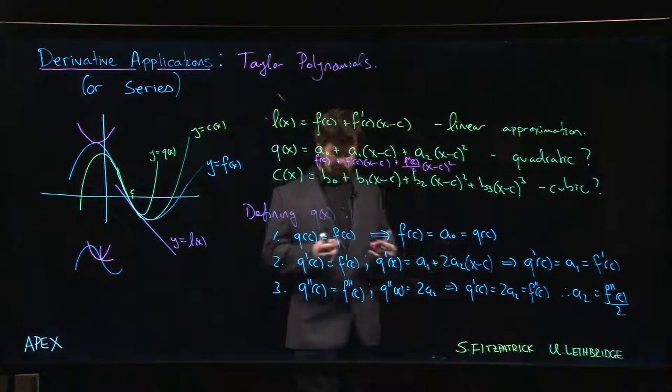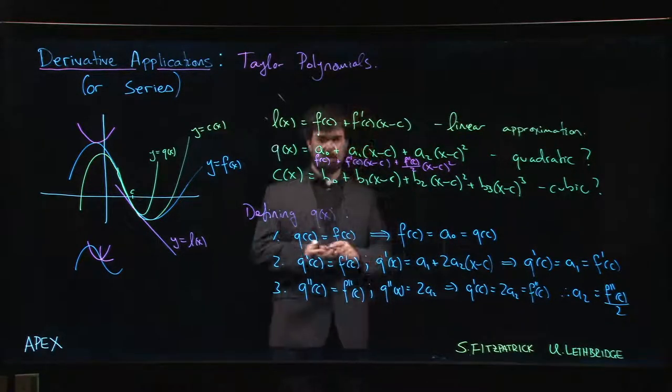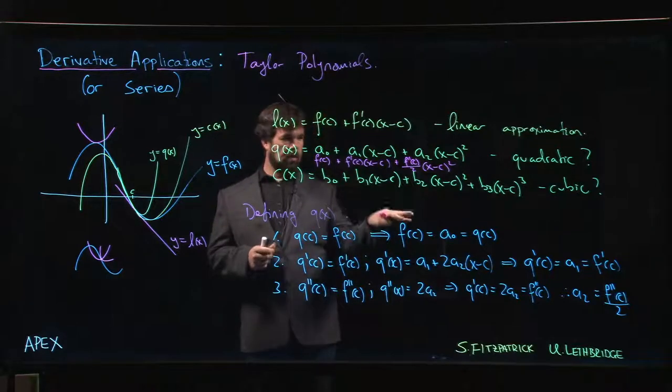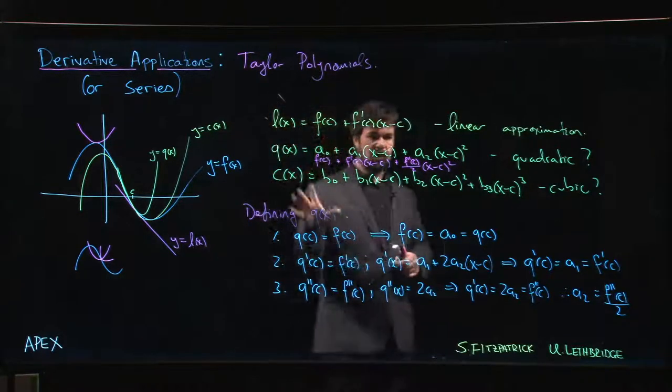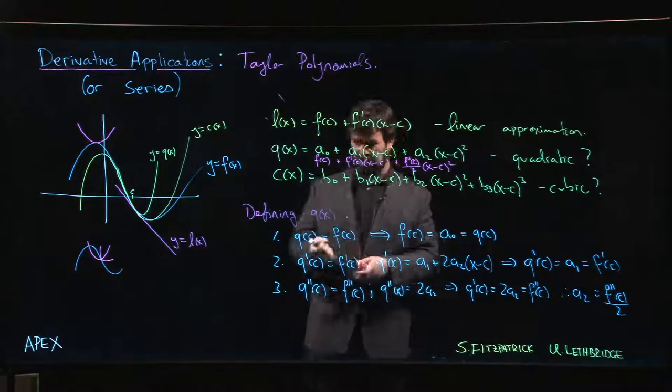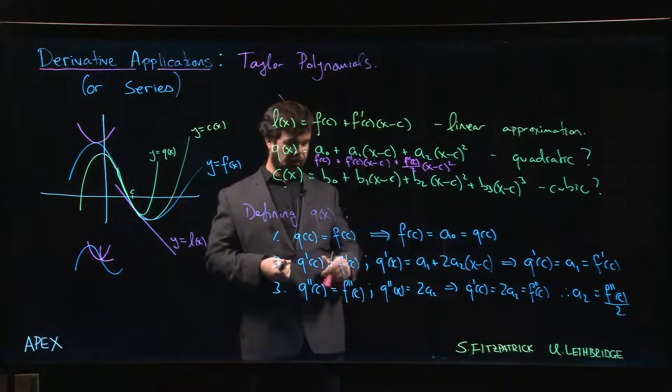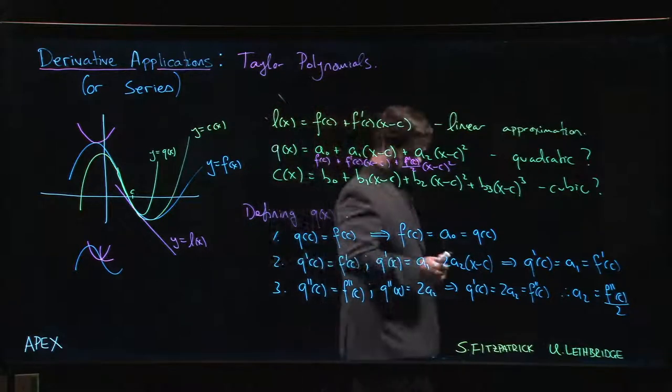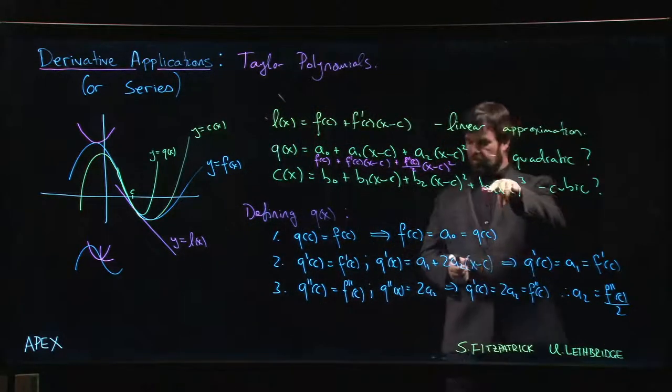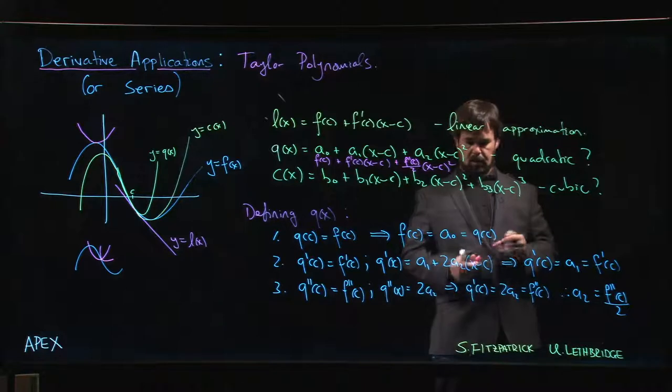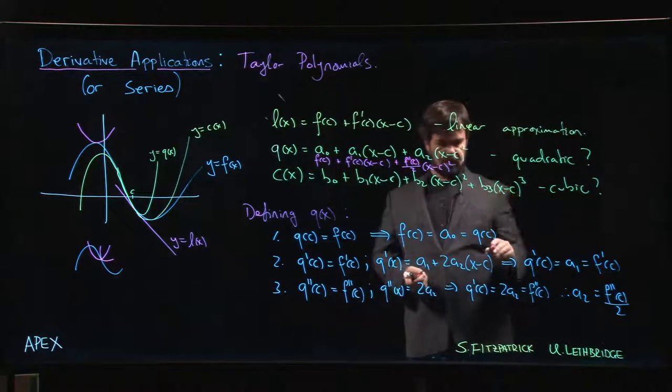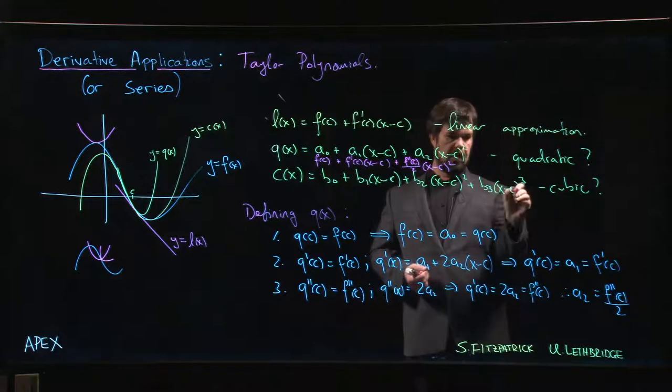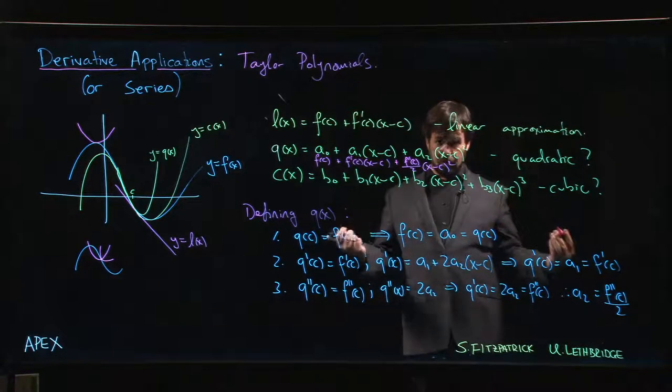And now you've got yourself a quadratic approximation. And if you wanted to do cubic, well, it's going to be the same story. The work that we did here, it's going to be exactly the same, because what would happen is that cubic term would be along for the ride. If we were doing it here, we'd still have the 3 would come down, we'd have 3b₃ x minus c squared, still goes away when you plug in x equals c.